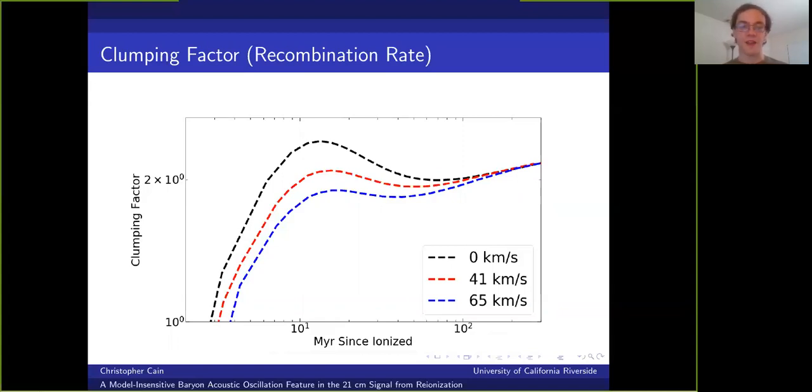However, once the clumping factor starts decreasing thanks to the dynamical relaxation process, the stream velocity effect gradually disappears. And so this indicates that the cumulative impact of the stream velocity is washed out by the relaxation process. And so only recently re-ionized patches will contribute significantly to the net effect.